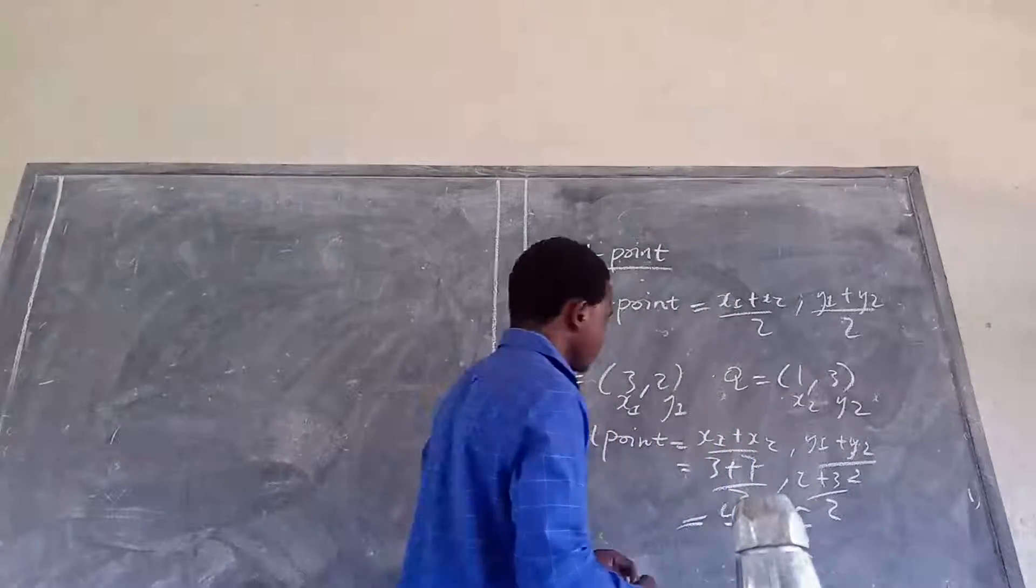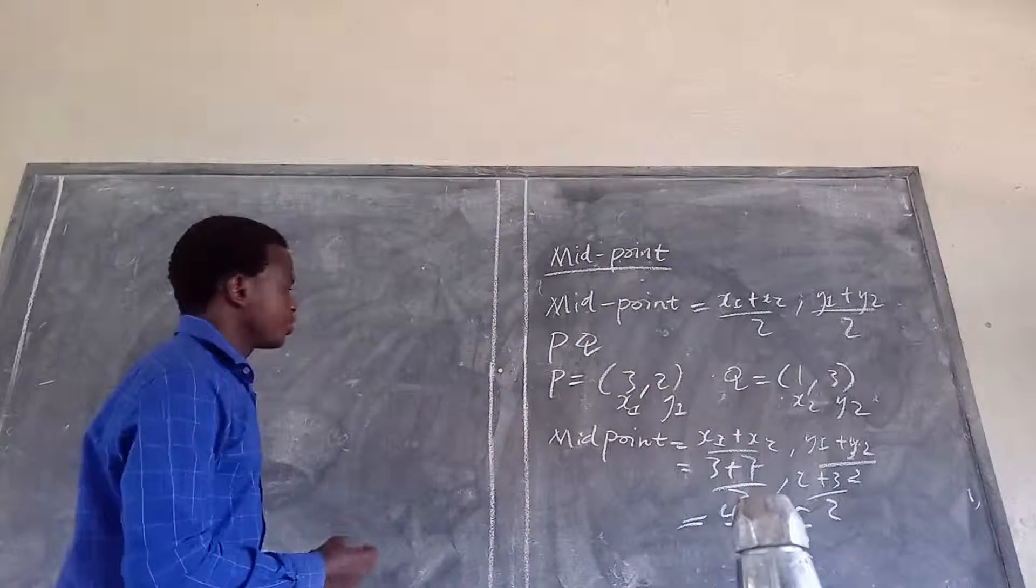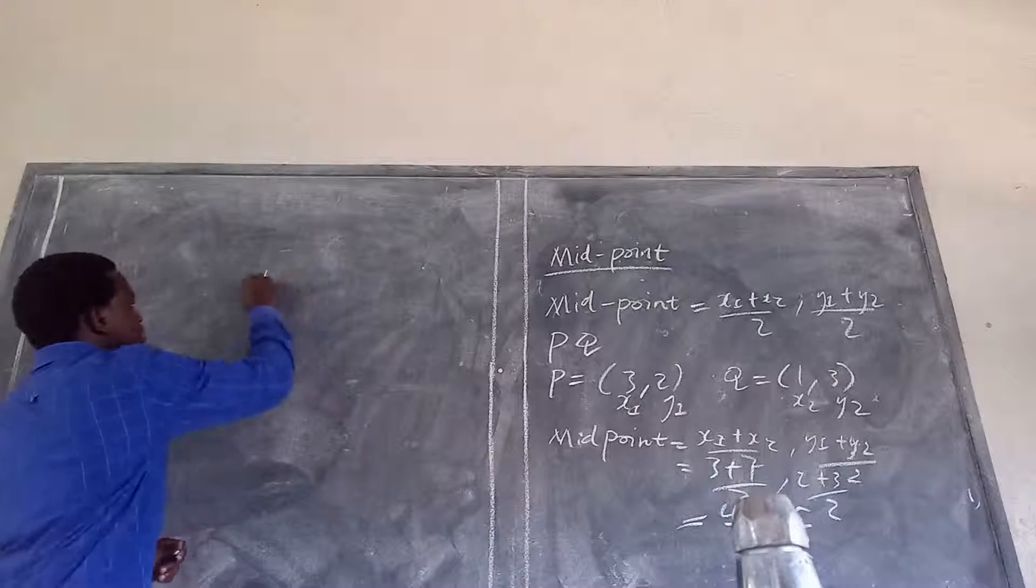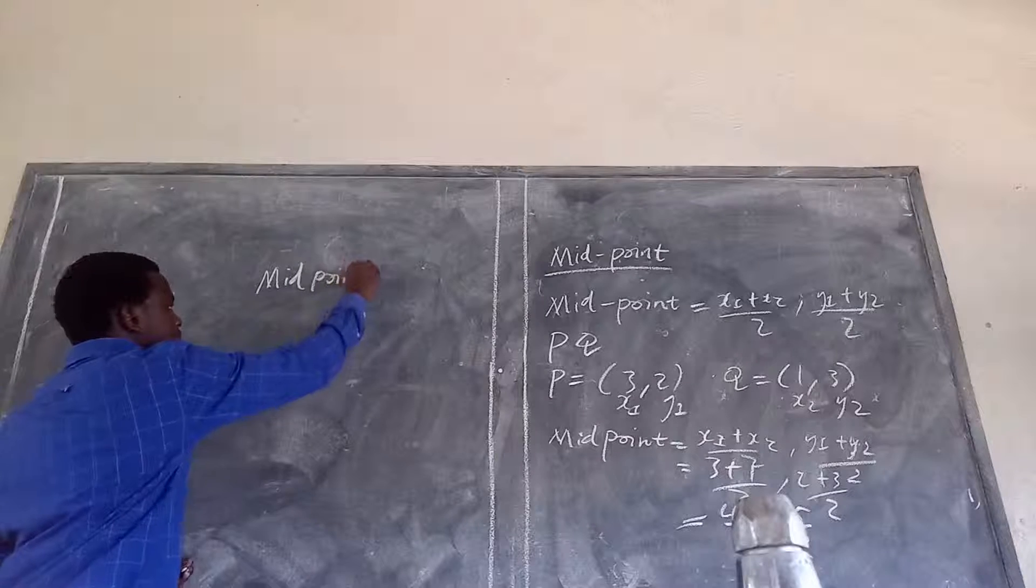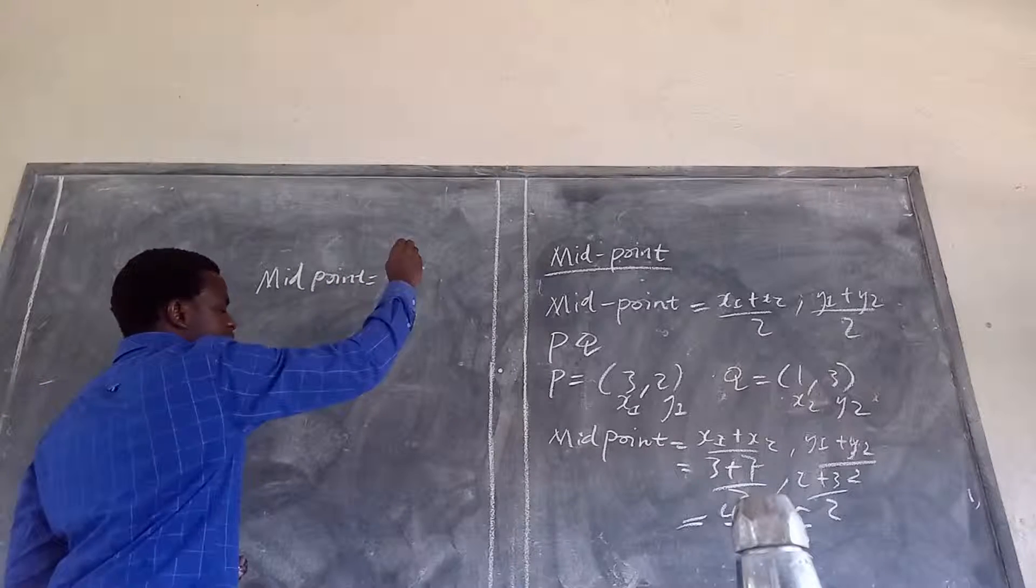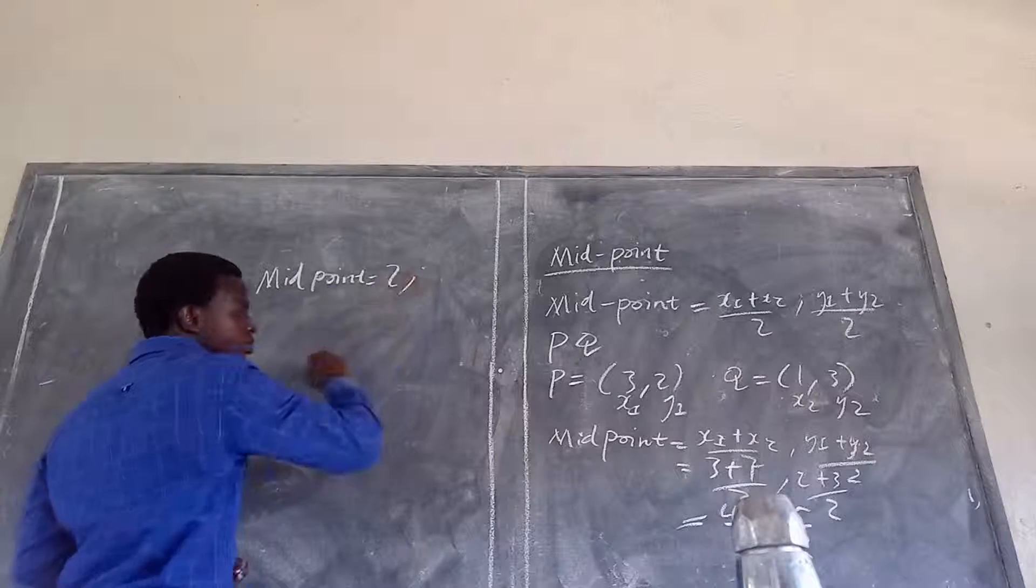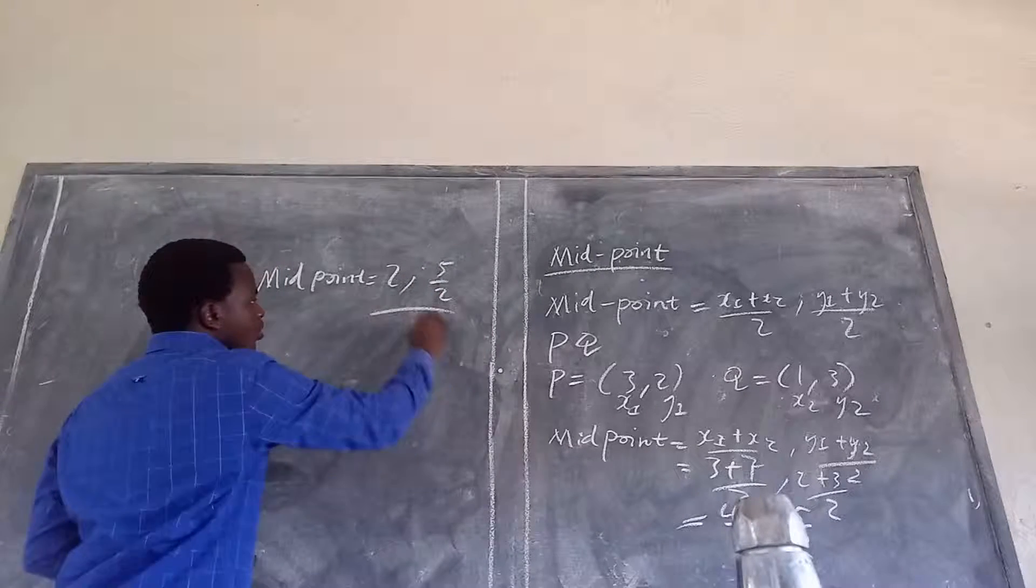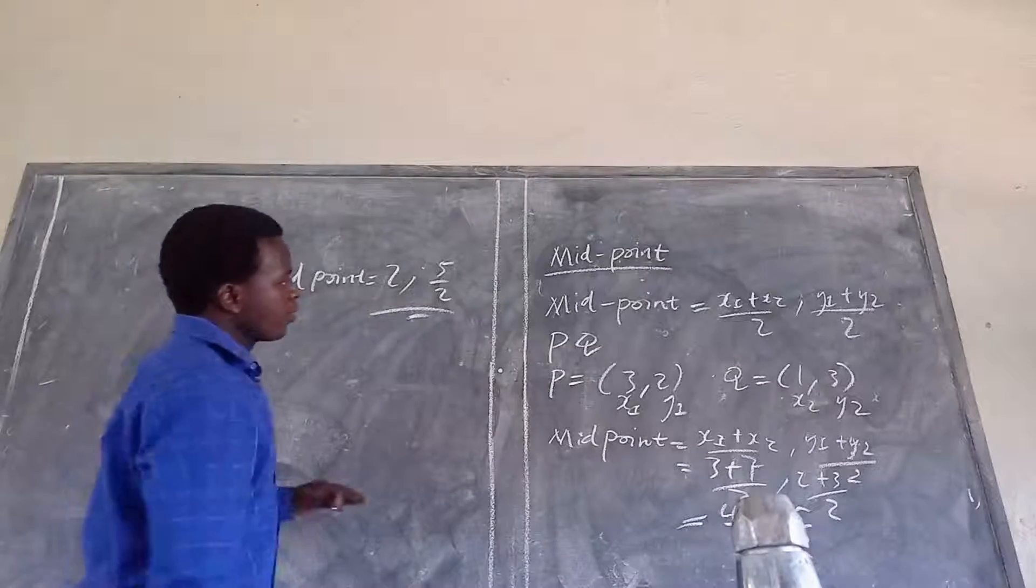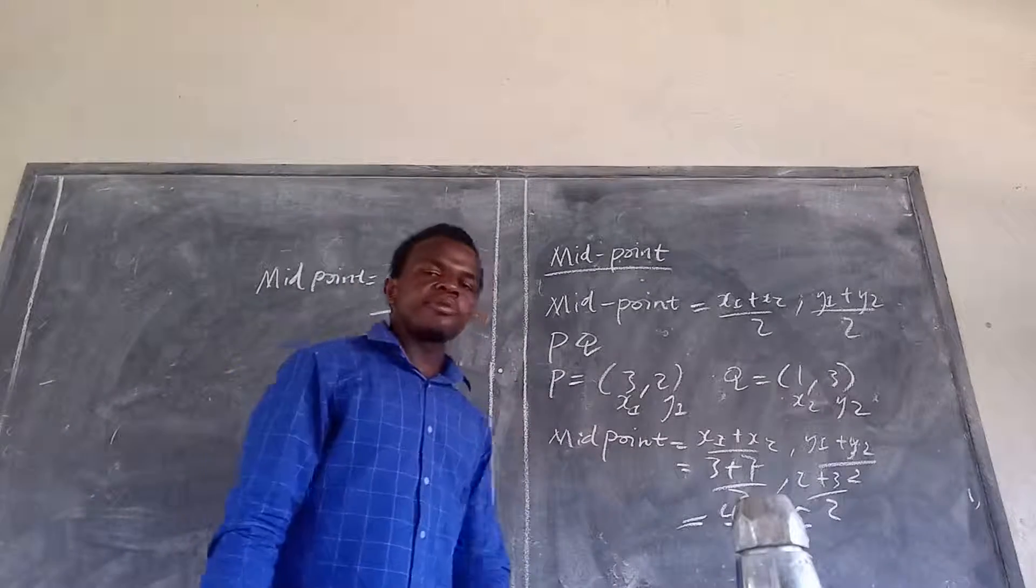Then, my final answer here, the midpoint is equal to 4 divided by 2, which is 2 comma 5 over 2. So, this is the midpoint of this line PQ.